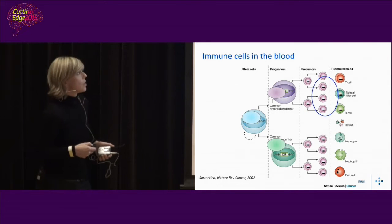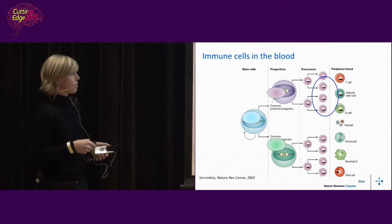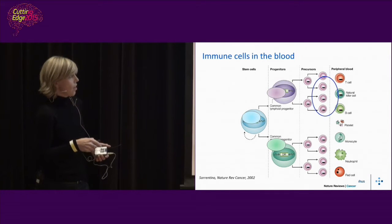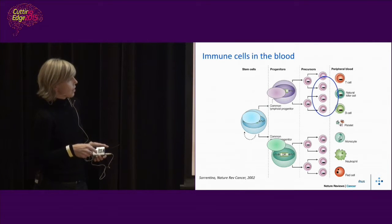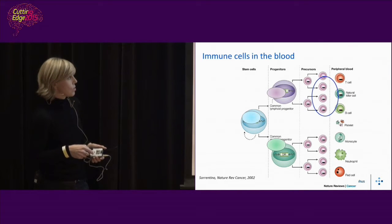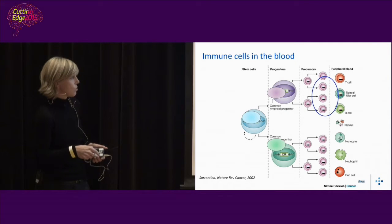We have immune cells in the blood that we use. They all originate from stem cells, then differentiate into progenitor cells and then precursor cells, and go into the blood as different types of immune cells. The main types used in immunotherapy are from the adaptive system — the ones that can have memory. B cells produce antibodies, and T cells can directly attack the tumor and organize the rest of the immune system.